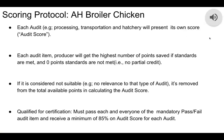There is a scoring protocol for broiler chicken. Each one gets an audit — the processing, transportation, and hatchery will each have their own score. For each audit item, the producer receives the highest number of points if standards are met; if not met, they get no points. There is no partial credit. If something is considered not applicable for the poultry, it is removed from total available points when calculating the audit score. To qualify for certification, they must pass all mandatory pass-fail audit items and receive a minimum of 85% on the audit score for each audit.